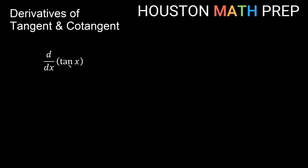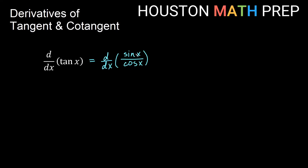So the derivative of tangent x with respect to x — to work this out we just want to think of tangent x as its quotient identity from trig. So we'll think of this as the derivative with respect to x of sine x over cosine x. We can then use the quotient rule to do this.